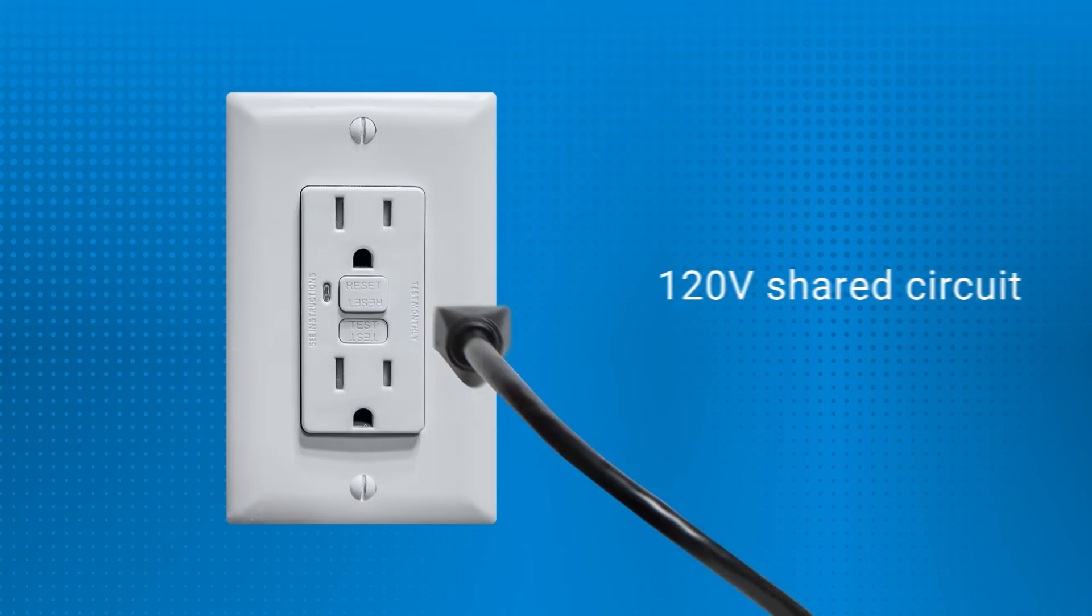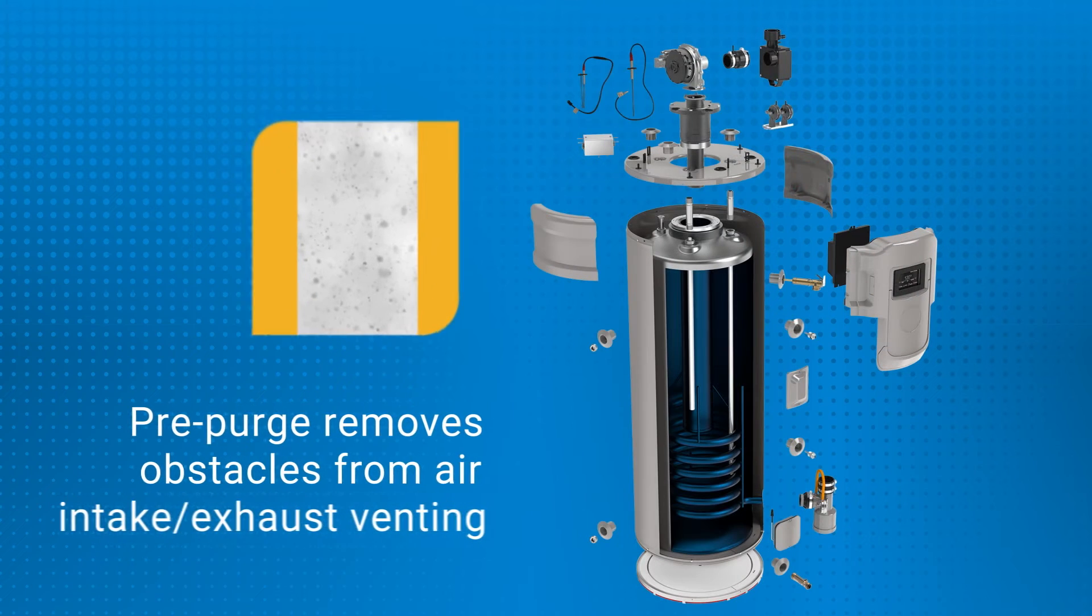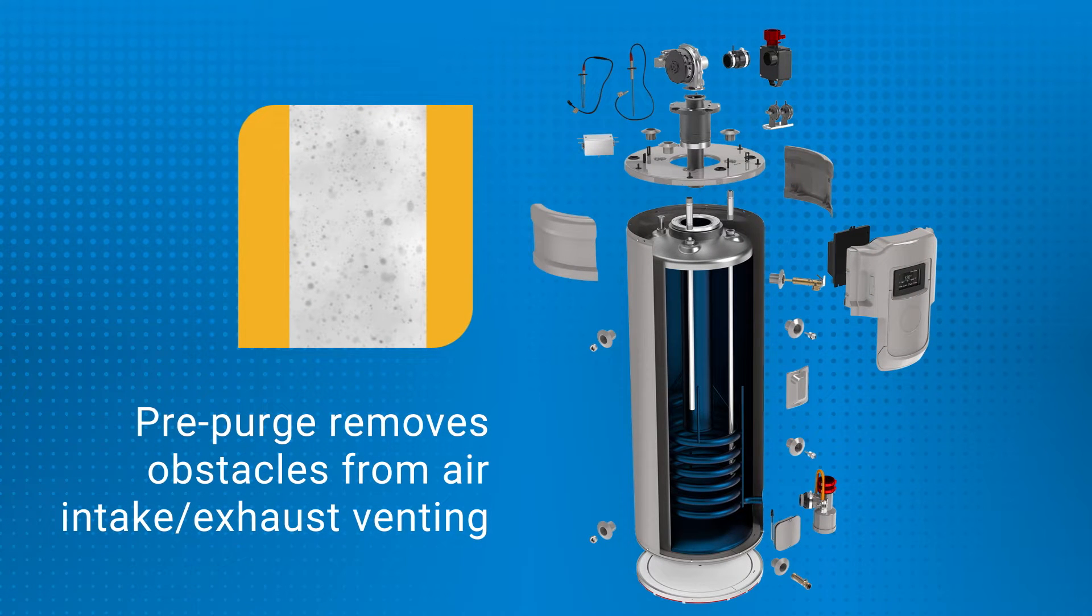The blower, powered by a factory installed plug and requiring a standard 120 volt shared circuit, answers the call and begins the pre-purge cycle, pulling air through the intake venting.